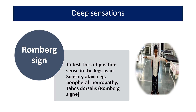Whenever a child has loss of position sense in the legs, they will have sensory ataxia. When told to close the eyes, the child will not be able to maintain posture. This is seen in peripheral neuropathy and tabes dorsalis, and is considered a positive Romberg sign.